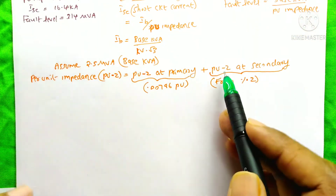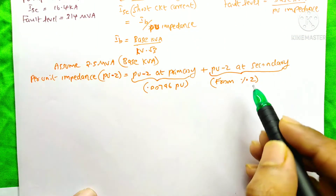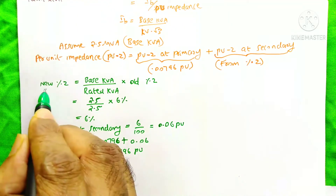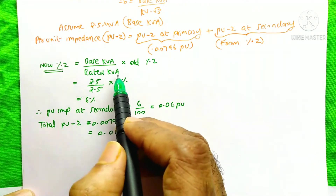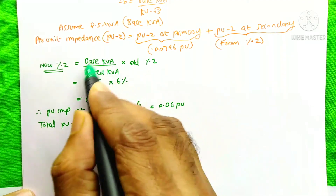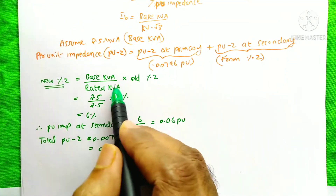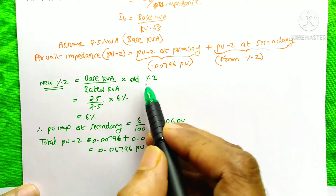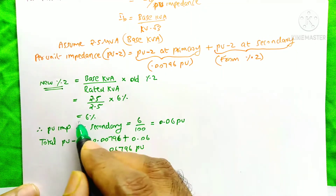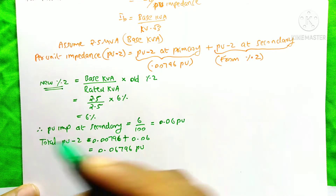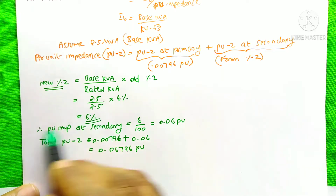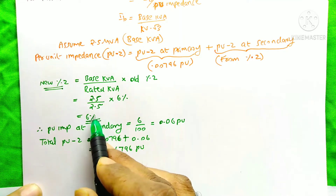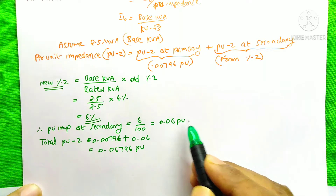The per unit impedance at the secondary side we need to calculate from the percentage impedance of the transformer, which is 6%. First, we find the new per unit impedance using the equation: base kVA divided by rated kVA, multiplied by old per unit impedance. Base kVA is 2.5 MVA, rated kVA is also 2.5 MVA, so 2.5 divided by 2.5 equals 1, multiplied by 6% gives 6%. Converting to per unit: 6% divided by 100 equals 0.06 per unit impedance.